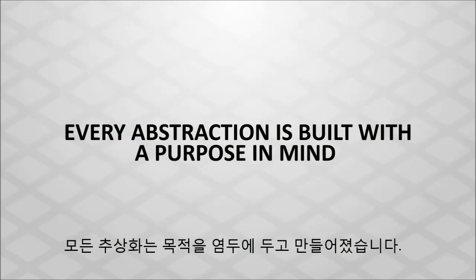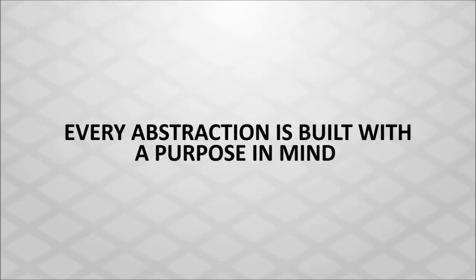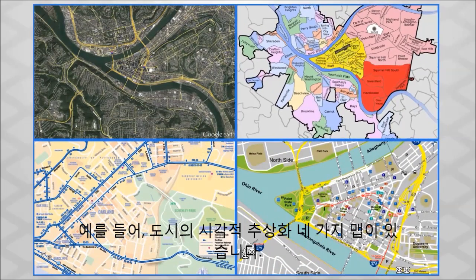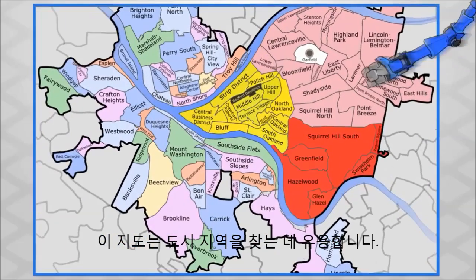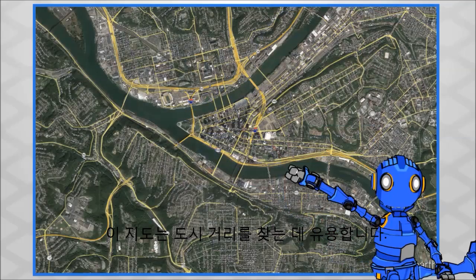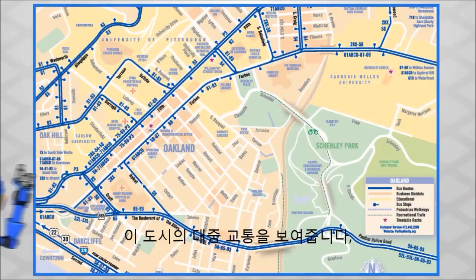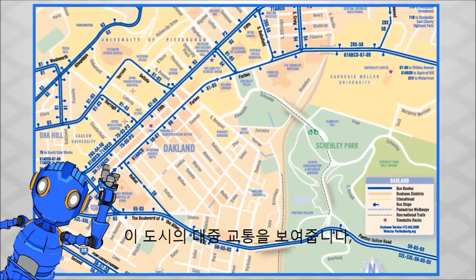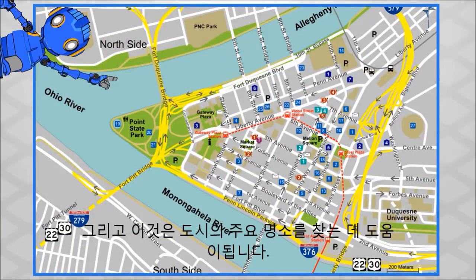Every abstraction is built with a purpose in mind. For example, here are four different maps. This map is useful for finding city neighborhoods. This map is useful for finding city streets. This one shows the public transportation of the city, and this one helps find major attractions in the city.